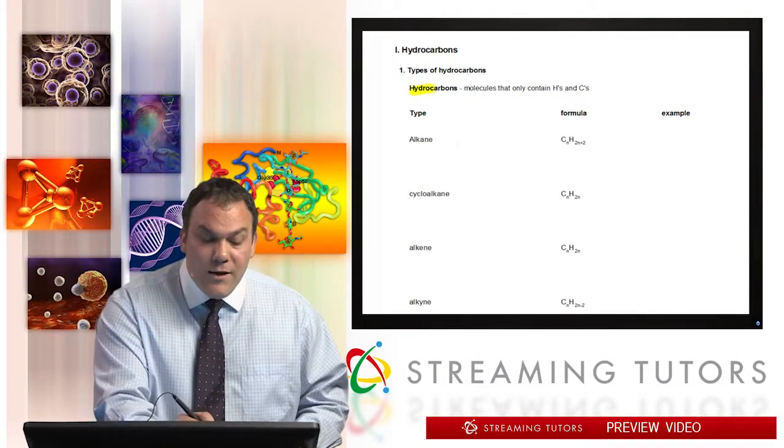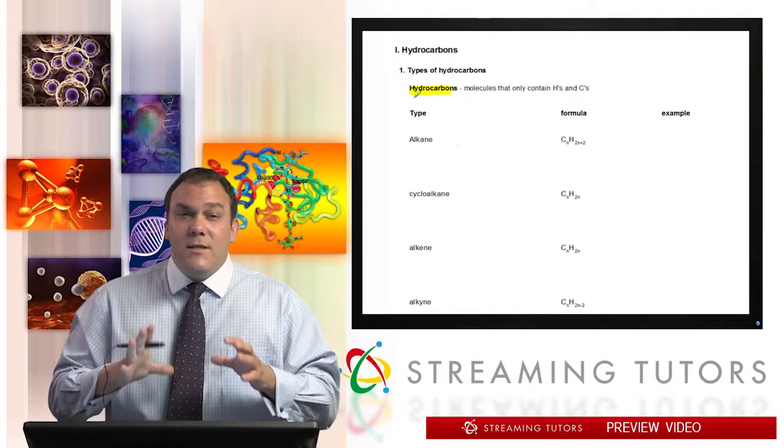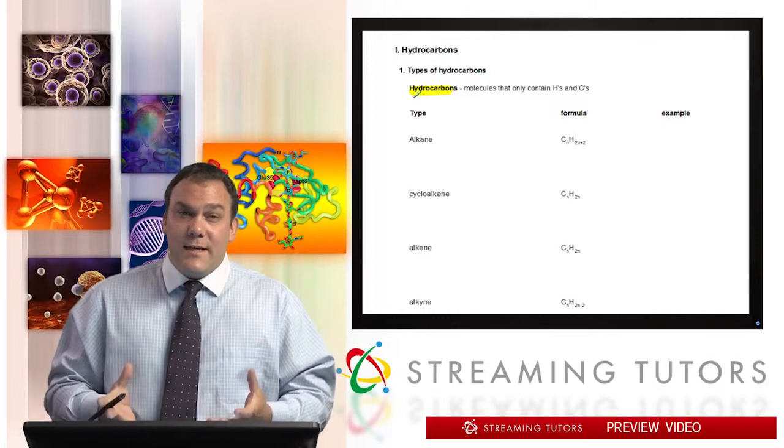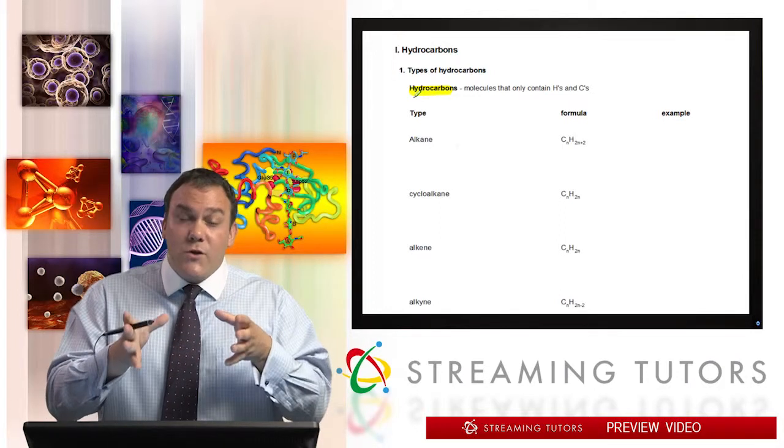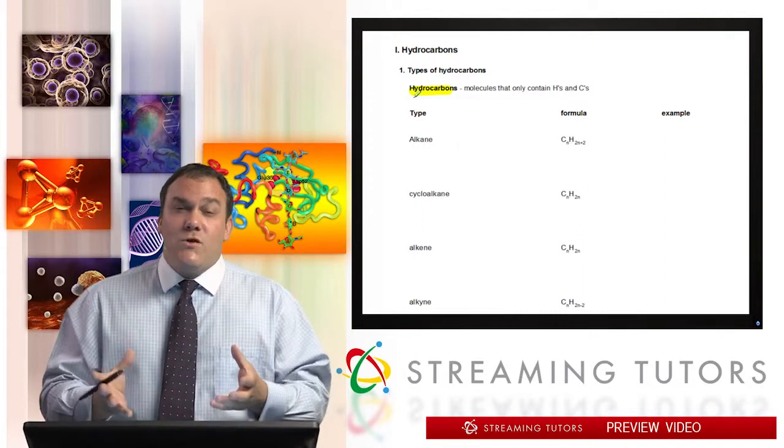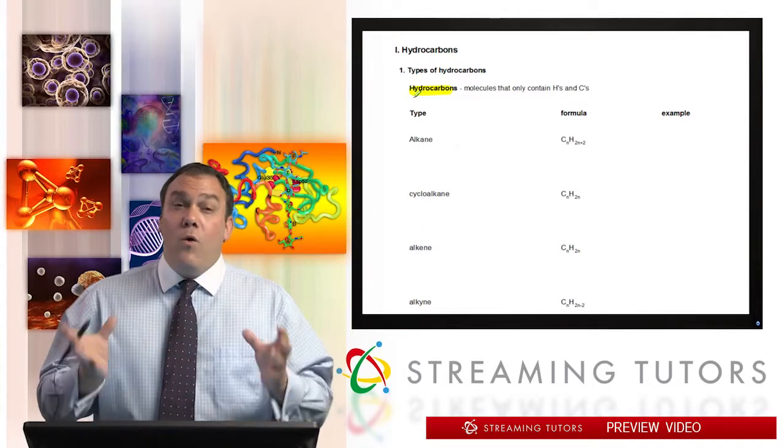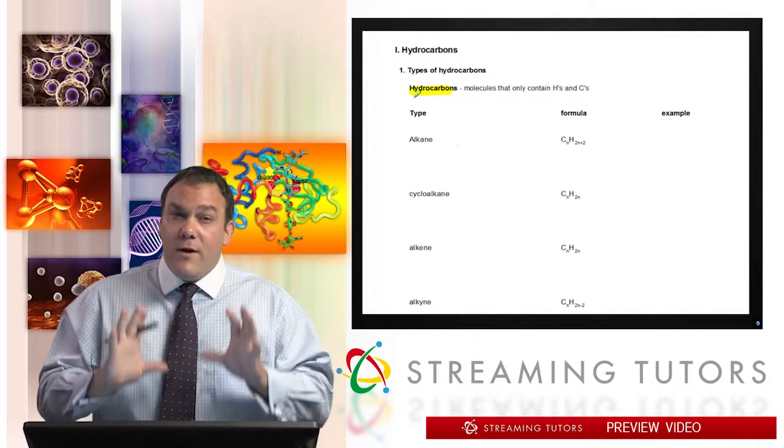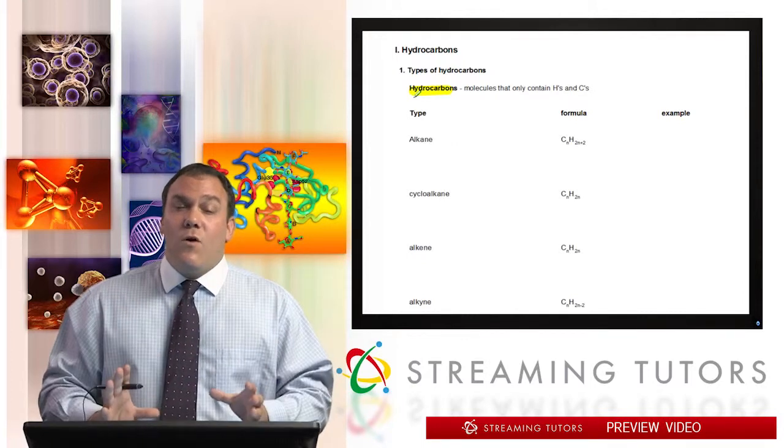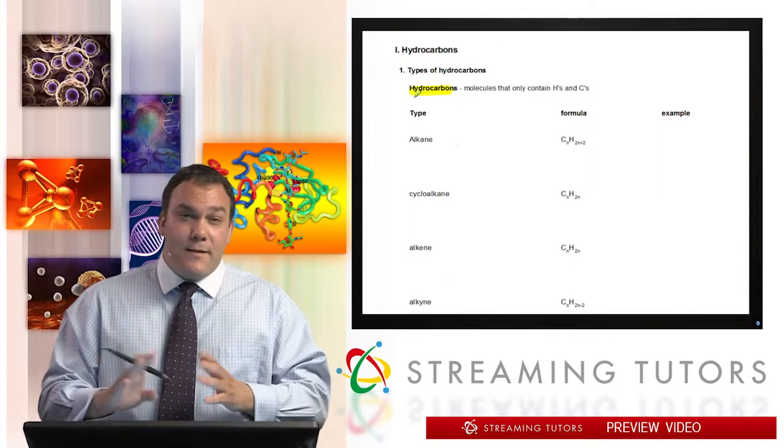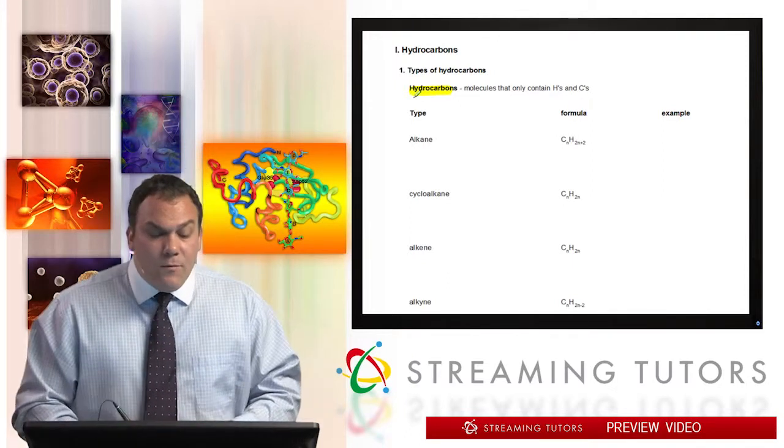The first thing here is talking about the types of hydrocarbon, and of course that should lead you to the question as to what is a hydrocarbon. Hydrocarbons are molecules that just contain H's and C's. Now it turns out that you can have components of a molecule, portions of a molecule that are hydrocarbon-based, but maybe not the whole molecule is a hydrocarbon.